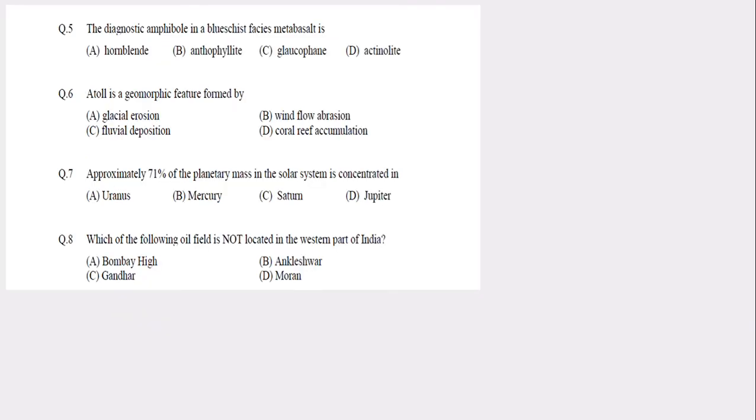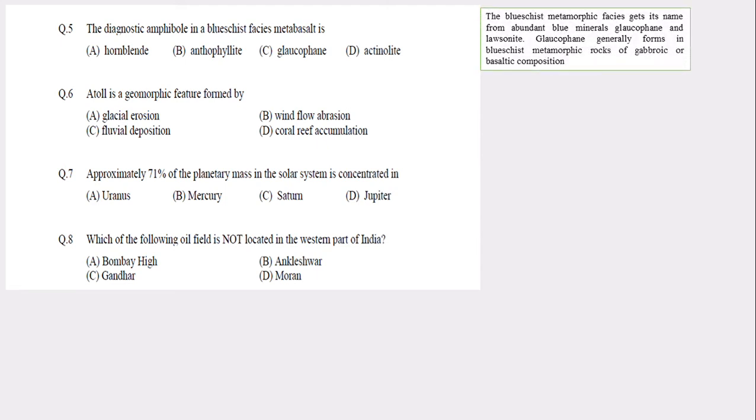Next question: a diagnostic amphibolite in blue schist facies of metabasalt rock. Blue schist metamorphic facies gets its name from blue-colored minerals like glucophane and lawsonite. When gabbroic or basaltic rock gets metamorphosed under blue schist facies, they get the mineral glucophane. So the answer is C, glucophane.